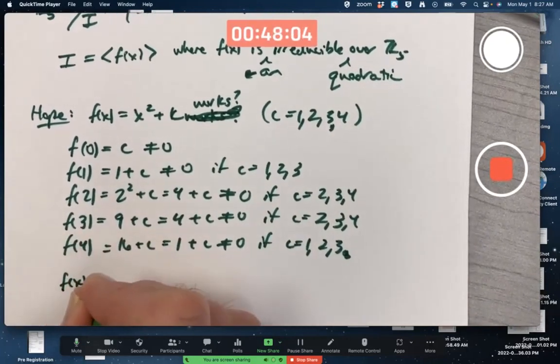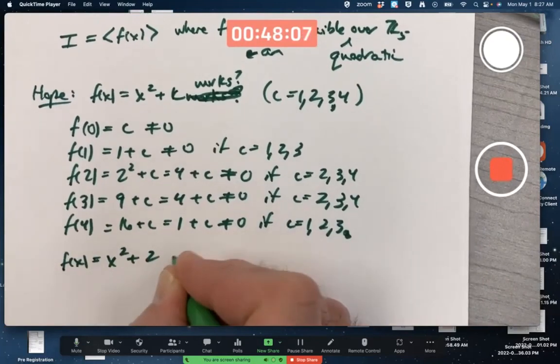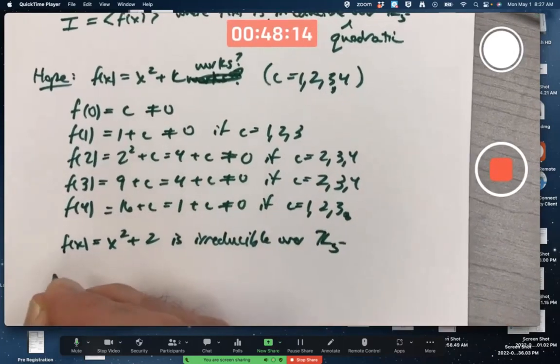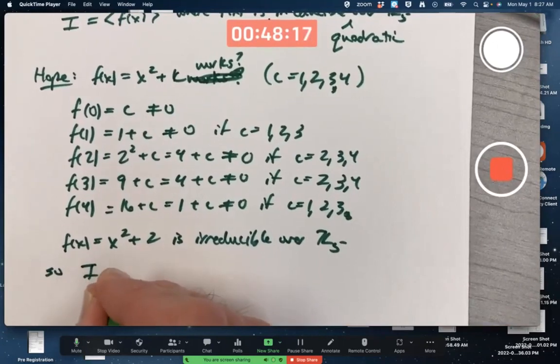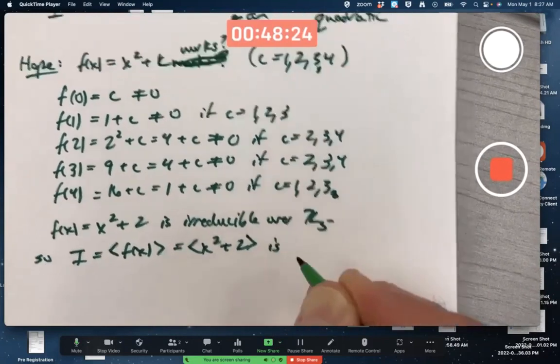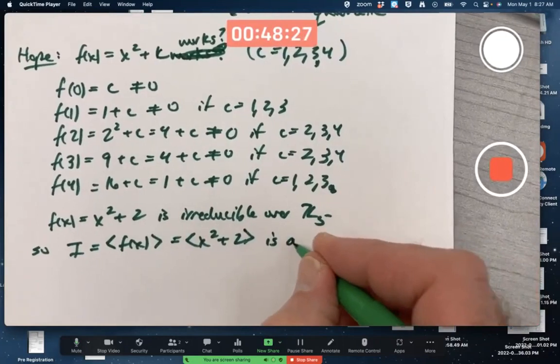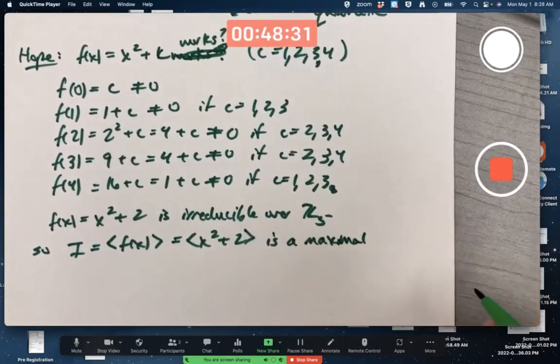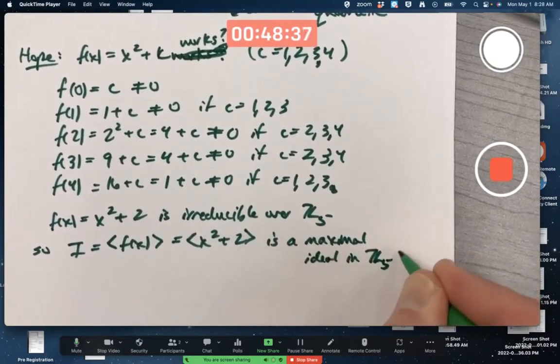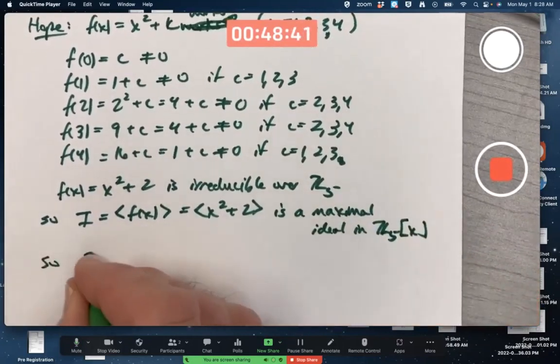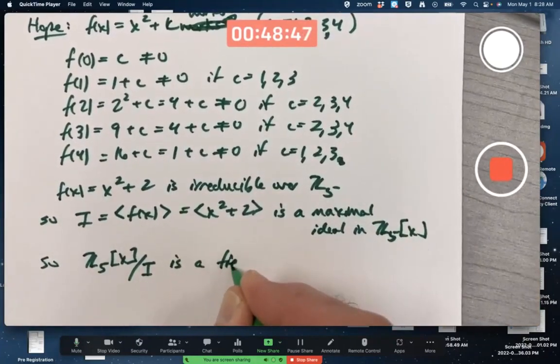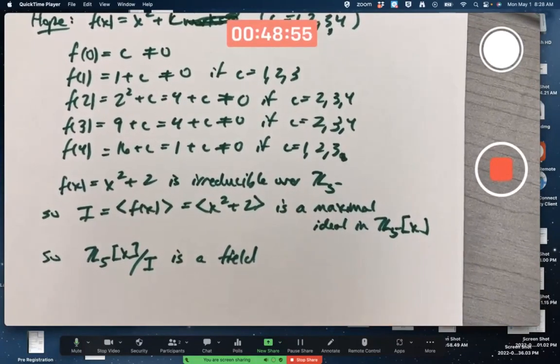Looks like f of x equals x squared plus 2 is irreducible over Z5. So, what can we say about that? That means I equals the principal ideal generated by f of x is maximal ideal. That's a theorem. These are theorems you should work at remembering. It's maximal ideal in Z5X. So, Z5X mod that ideal is a field. Is it a field with 25 elements? Yes.